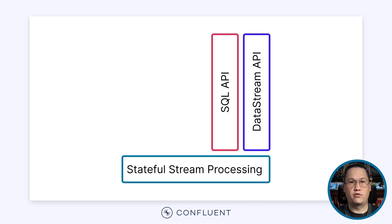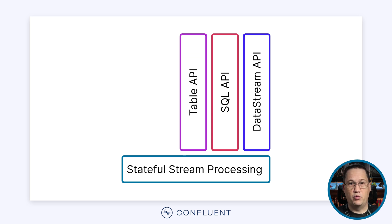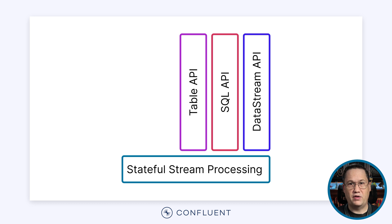For example, if you wanted to create a query that touched 500 different columns, in SQL you'd have to write that query manually. But what if you could leverage tools like loops, functions, and variables to generate the query for you? For those developers who are looking for a rich development experience, the Table API was created. It provides a domain-specific language for processing data streams as tables. It resembles SQL and provides access to familiar constructs like select, join, and window, but it's implemented in languages like Java and Python. This means it can leverage common libraries, functions, and programming constructs from those languages.